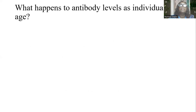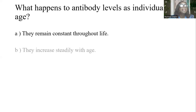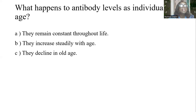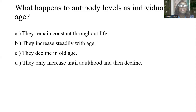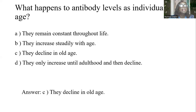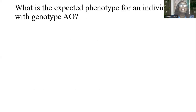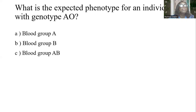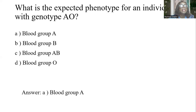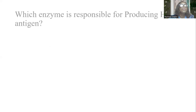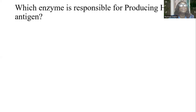What happens to antibody levels as individuals age? A) They remain constant throughout life. B) They increase steadily with age. C) They decline in old age. D) They only increase until adulthood and then decline. The answer is C: they decline in old age. What is the expected phenotype for an individual with genotype AO? Options: Blood group A, Blood group B, Blood group AB, Blood group O. The answer is A: blood group A.